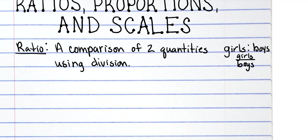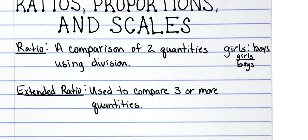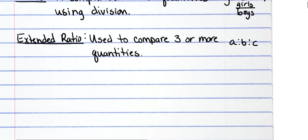Then we also have extended ratios, and that is used to compare three or more quantities. So in this situation it would be like a to b to c, so it would be more than one, and anytime you have more than one we always use colons, we don't use fractions. Then we have some example problems.